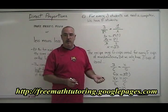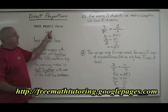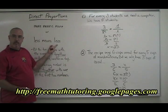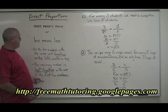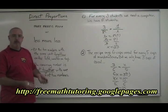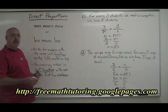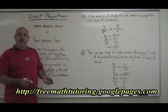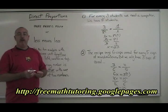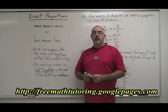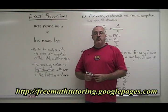This is how you do a direct proportion. First, analyze the situation to see if you have a more means more or less means less situation — that means it's direct. Put the two numbers with the same unit together on the left, smaller one on top. Then put the remaining number together with the number it goes with by the logic of the problem. Put the x in the last remaining place and you will always get your direct proportions correct. Use the exercise sheet to practice what you've learned, then use the answer sheet to correct your own work.